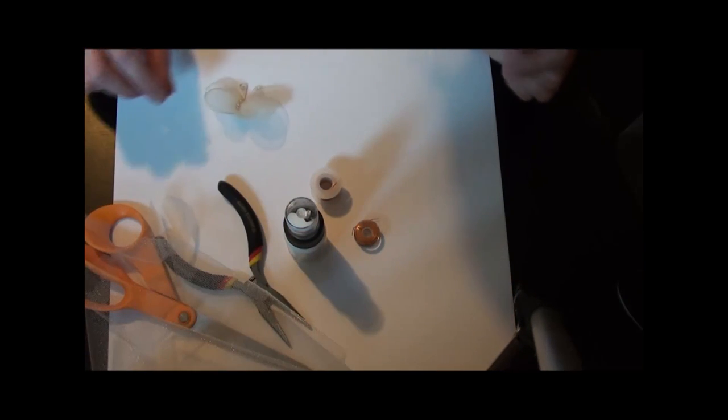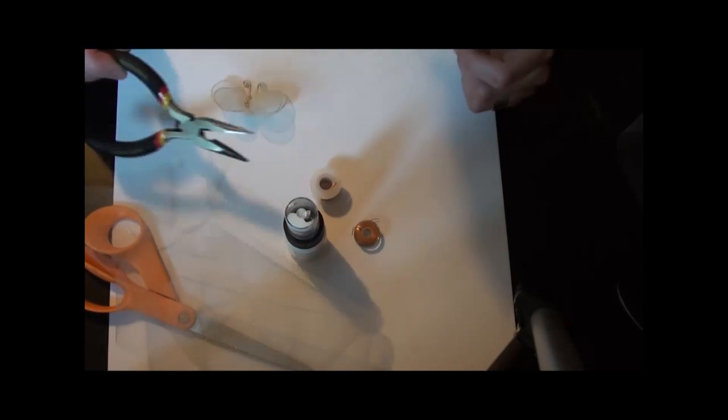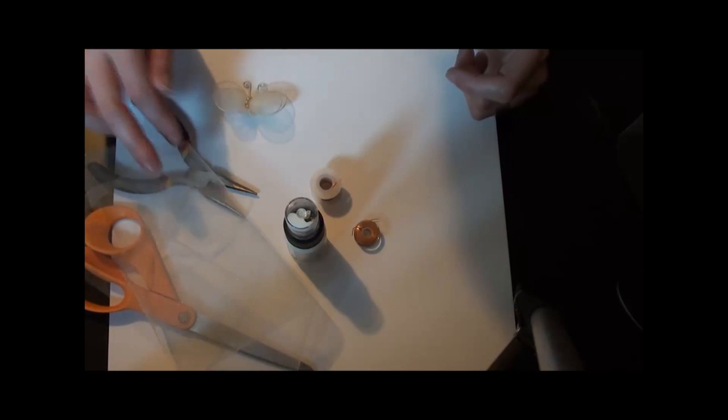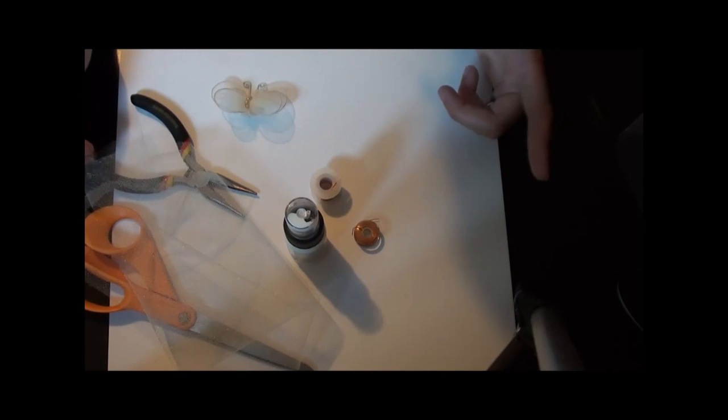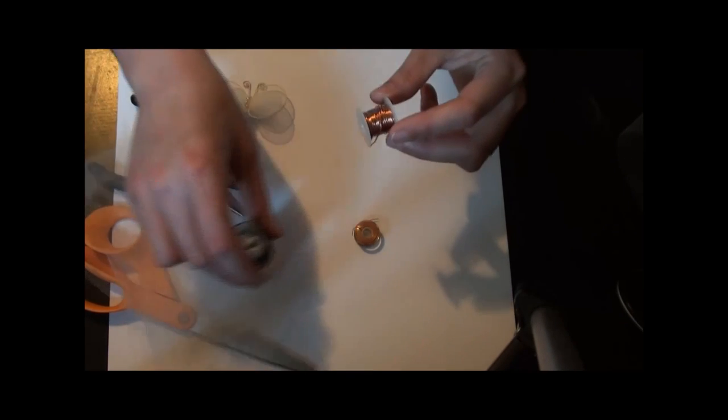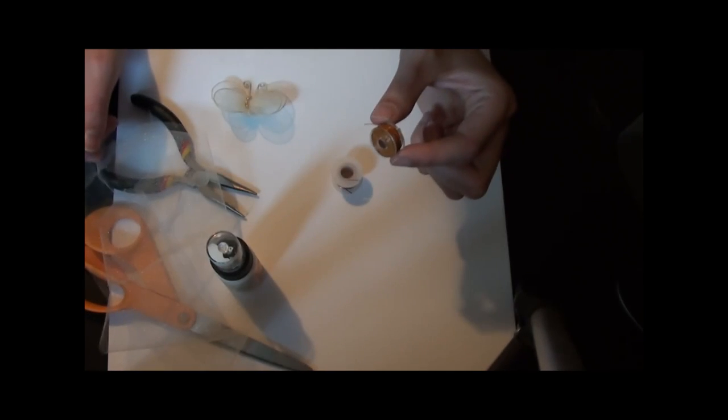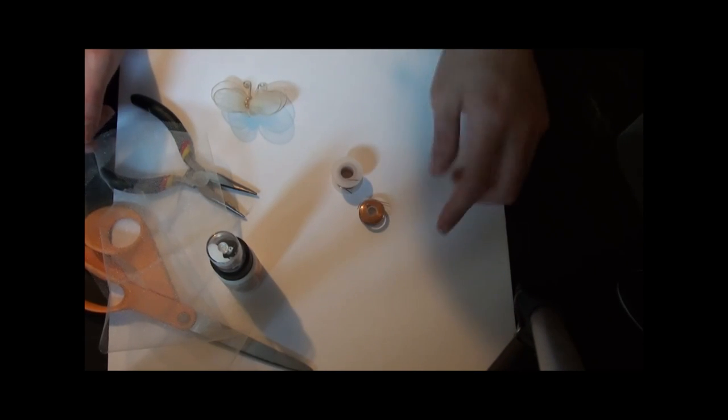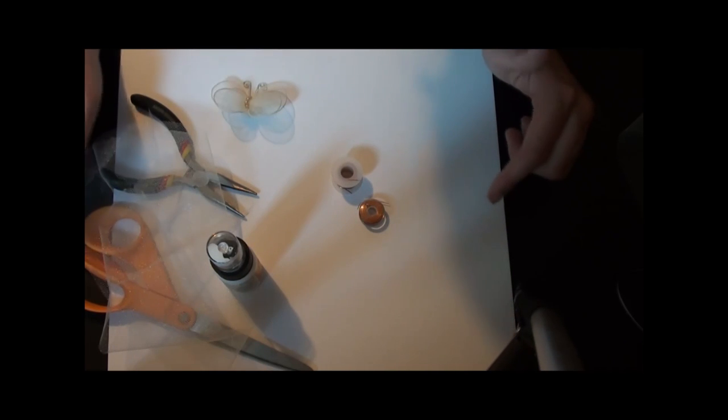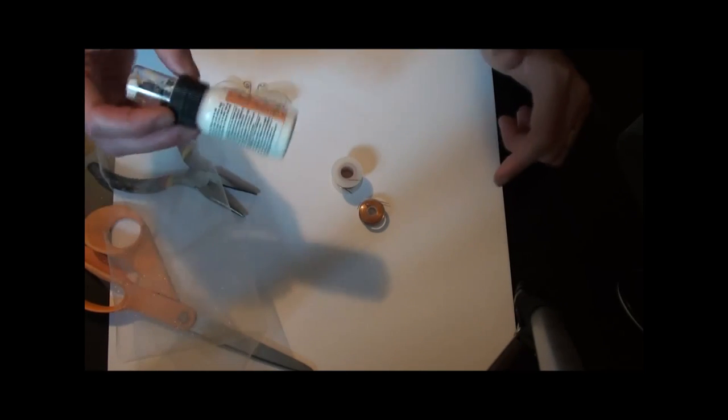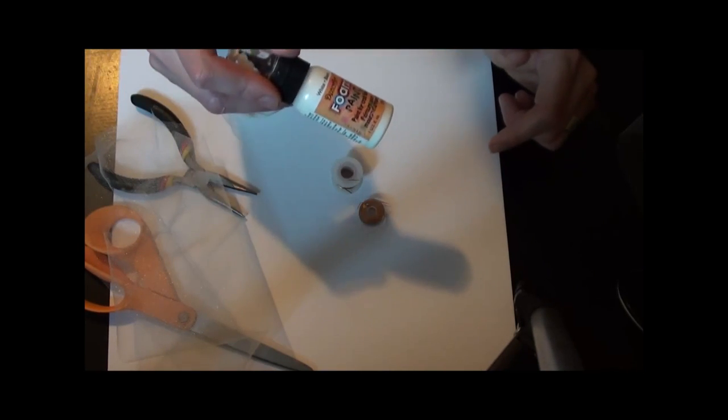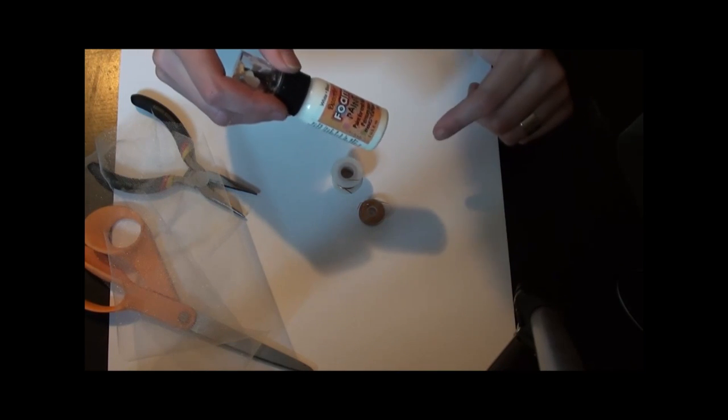To get started you'll want a wire cutter, you'll want some tulle, some beads, your scissors, some wire. I have wire in the 2mm size and I have wire in a 1mm size. So you'll want two different sizes of wire and then you'll also want something to form your butterfly wings with. I am just using this paint container and it is about 1 inch in diameter.